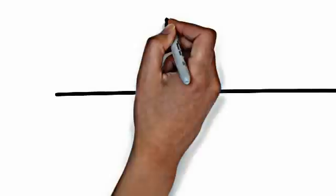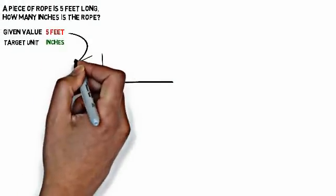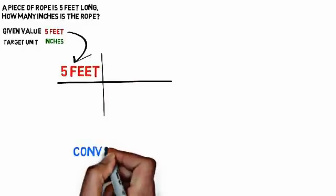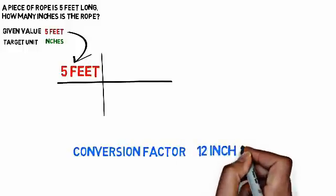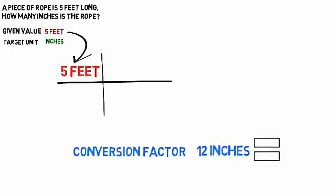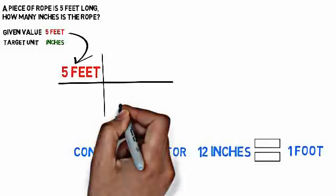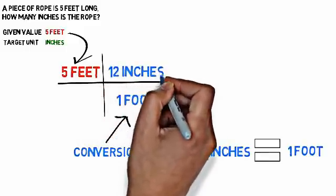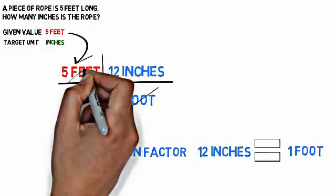We're going to draw a horizontal line and a vertical line, setting up a series of fractions. We take our given value — five feet — and put it at the starting point. Now we use our conversion factor: 12 inches is equivalent to one foot. In order to cancel units, they have to be diagonal from one another — one in the numerator, one in the denominator. So we write one foot in the denominator and 12 inches in the numerator, which cancels out the foot unit.